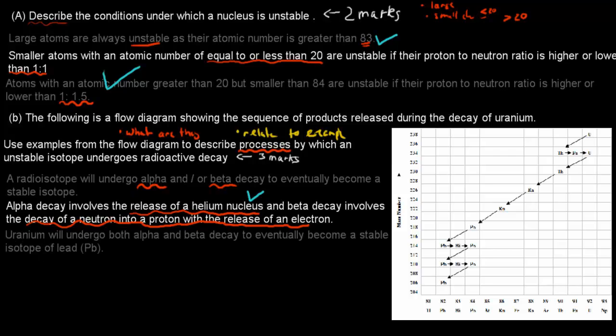So what I wrote is uranium will undergo both alpha and beta decay to eventually become a stable isotope of lead. So Pb, lead, I know Pb was lead.